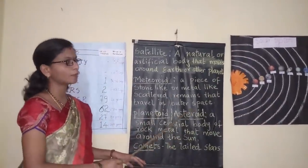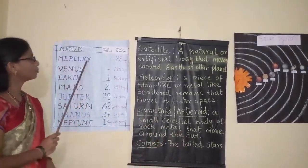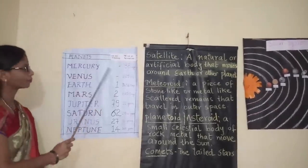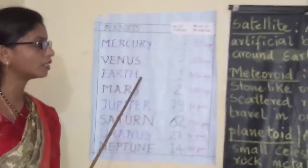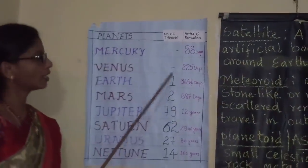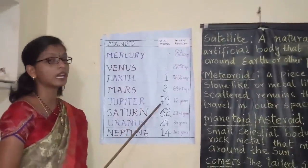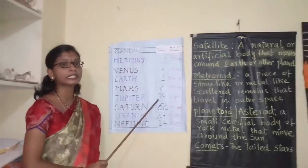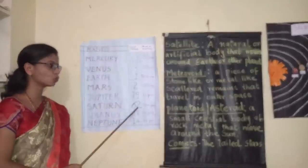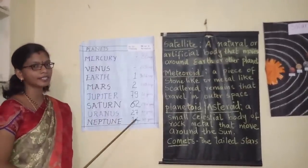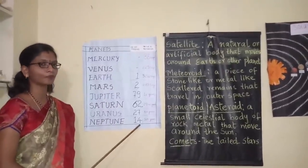Today we are going to learn about the number of moons that move around each planet. Mercury doesn't have any moon. Venus also doesn't have any moons. Earth has only one moon. Mars has two moons. Jupiter has the largest number of moons — 79. Saturn has 62 moons. Uranus has 27 moons. Neptune has 13 moons.